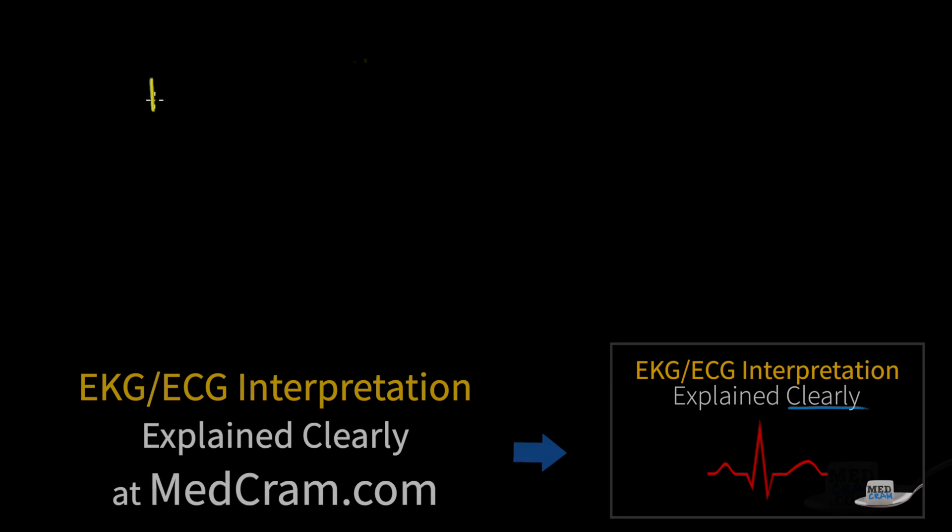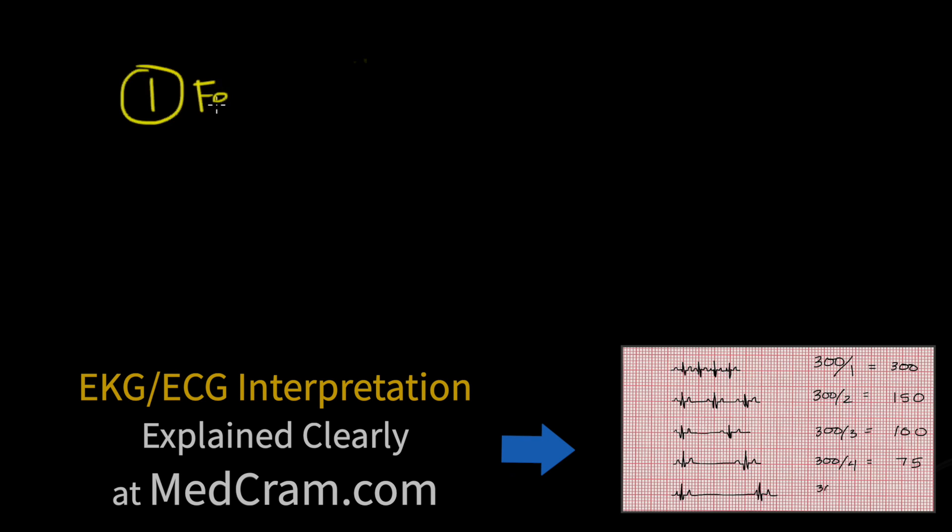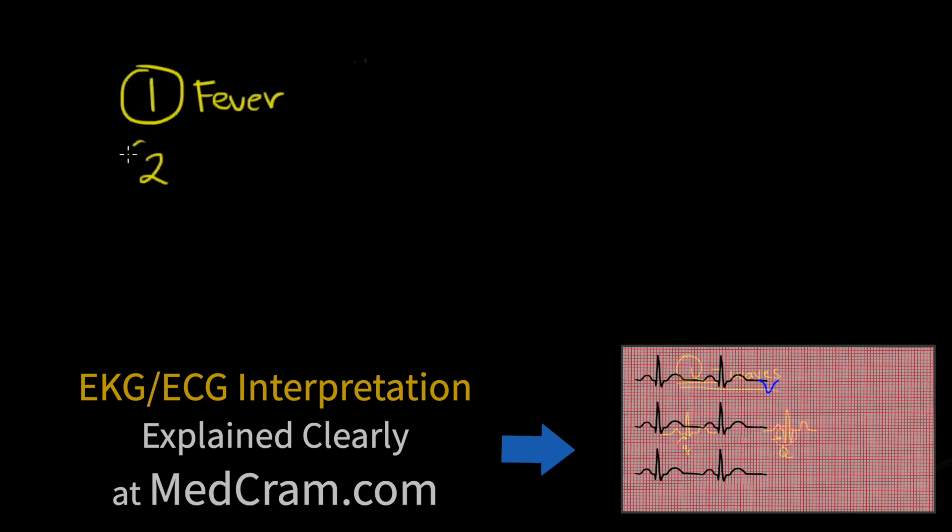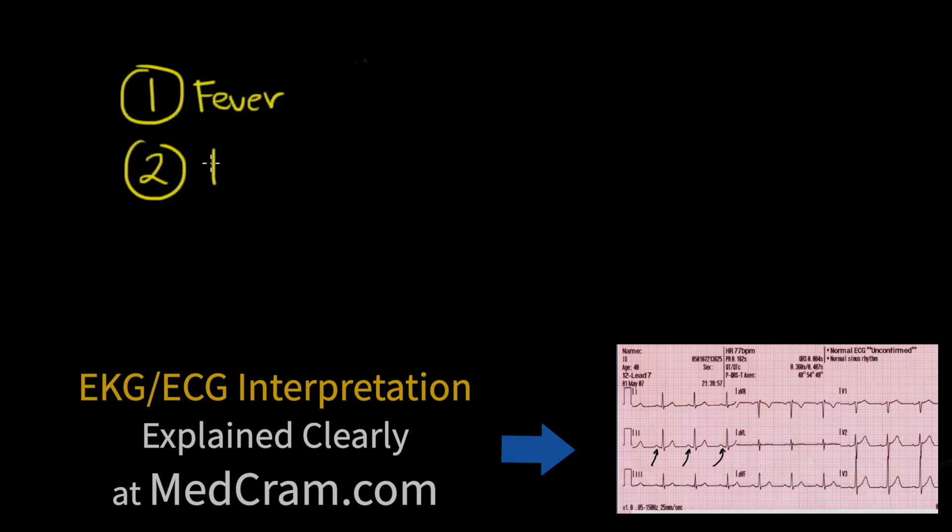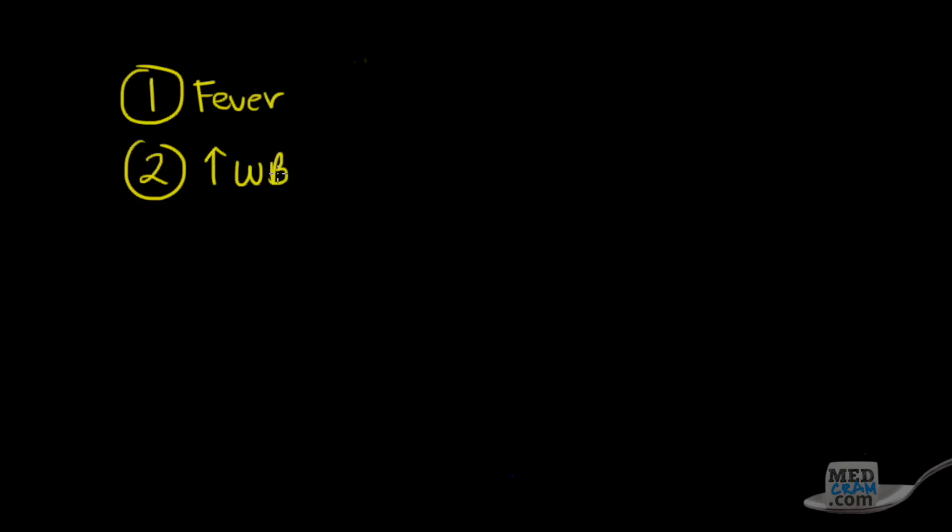You should see number one, a fever, although not always. Number two, an elevated white blood cell count. And number three, an infiltrate on the x-ray. A fever we get from taking the temperature, a WBC from ordering a complete blood count, and an infiltrate from ordering a chest x-ray.